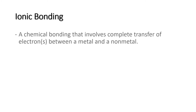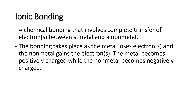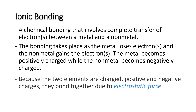Ionic bonding. When we say ionic bonding, it is a chemical bonding that involves the complete transfer of electrons between a metal and a nonmetal. The bonding takes place as the metal loses electrons and the nonmetal gains the electrons. The metal becomes positively charged while the nonmetal becomes negatively charged. Because the two elements are charged — one positive and one negative — they bond together due to electrostatic force.